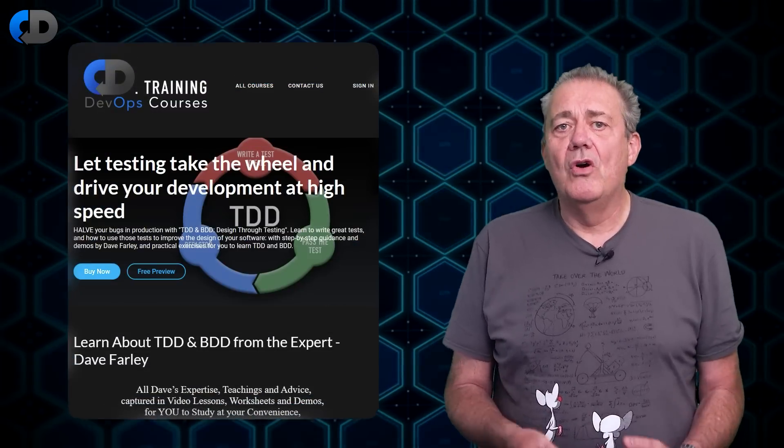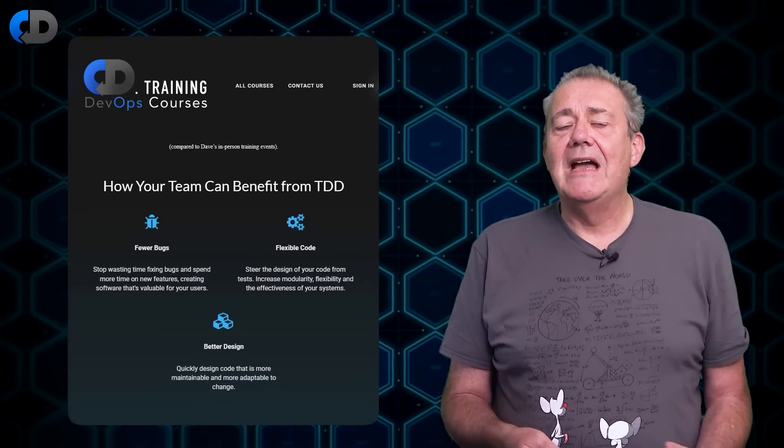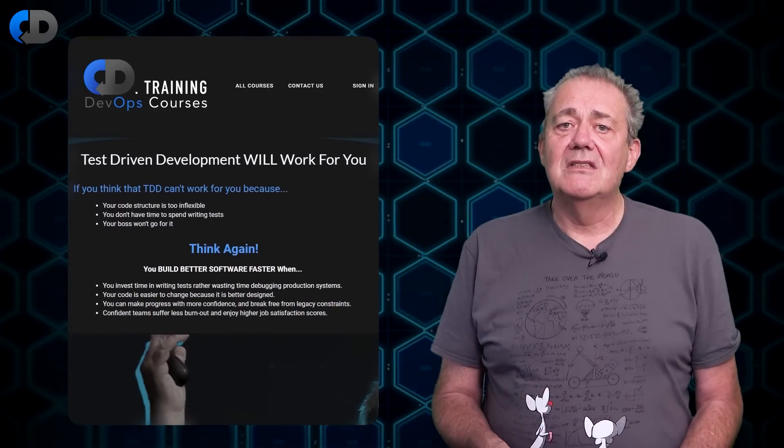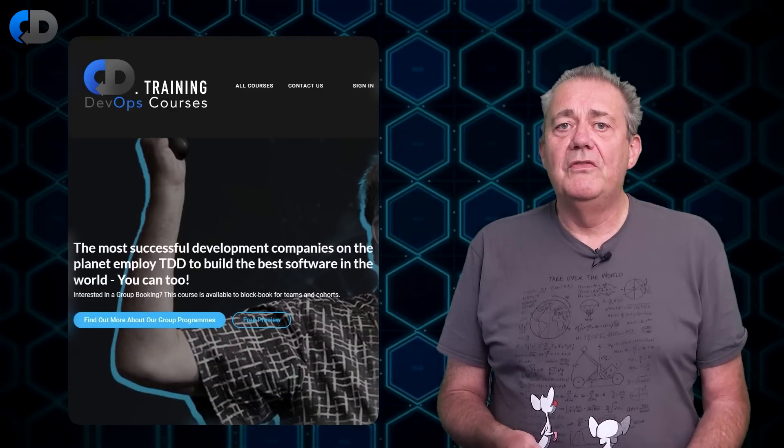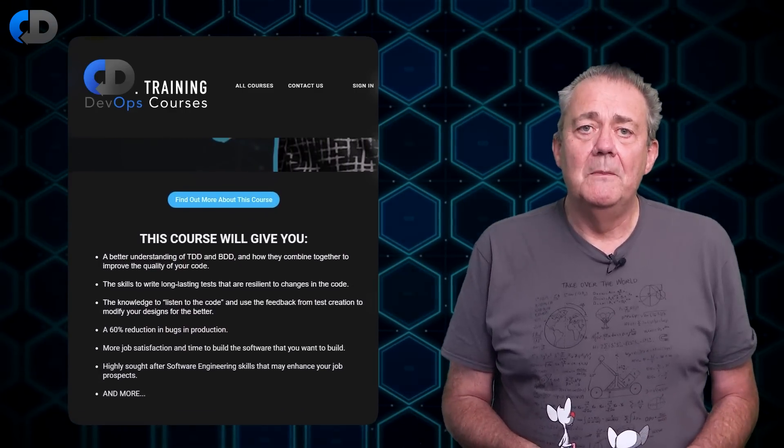If you'd like to learn more about how to do this in a lot more detail than I can sensibly cover here, please do check out my test-driven development and behavior-driven development designed through testing training course, which explores all of these ideas and more. There's a link in the description below. So our goal is a bit more complex than simply wanting to test our code. We want it to be relatively easy to change our code when we need to as well, and ideally to keep our tests running so that they can act as a defense against us breaking things.